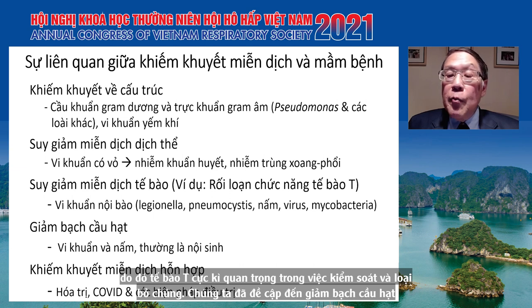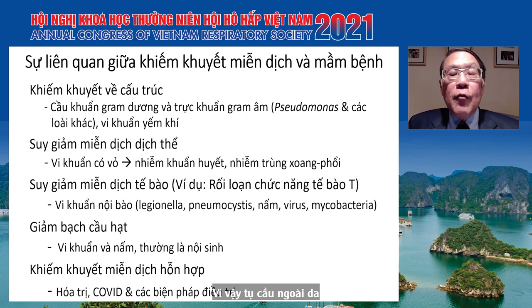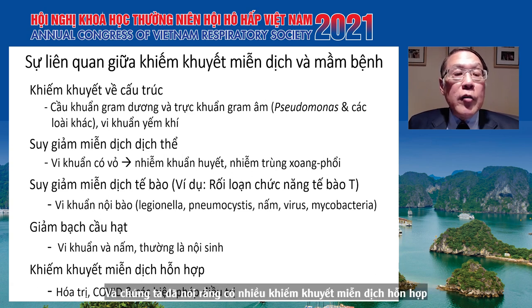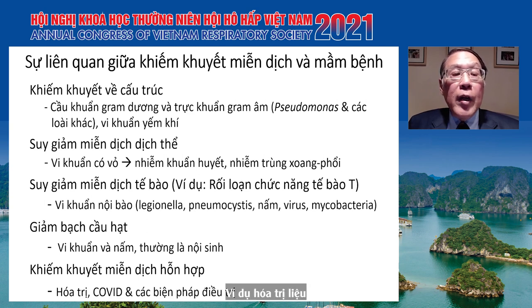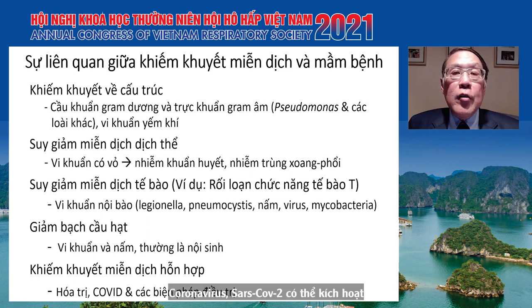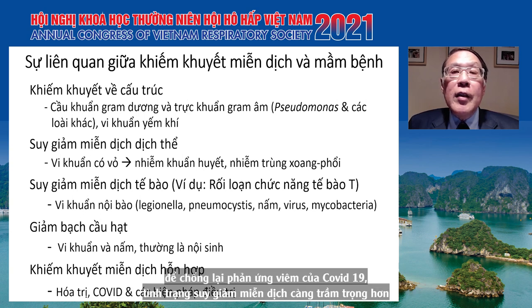Granulocytopenia — the lack of polymorphonuclear leukocytes — allows staph aureus from the skin and gram-negatives from the GI tract to become predominant pathogens. In the current COVID pandemic, it's been observed that SARS-CoV-2 tends to trigger specific immune as well as thrombotic defects, and when patients are treated with immunosuppression to fight the inflammatory features of COVID-19, immunosuppression is worsened.